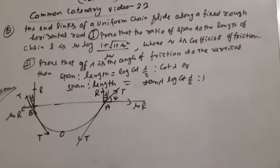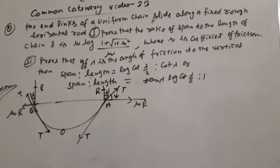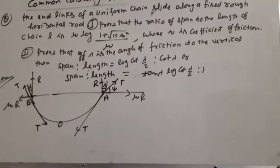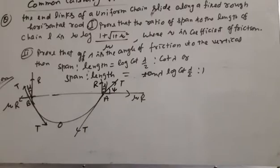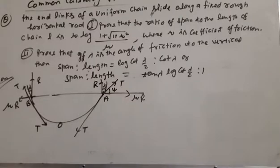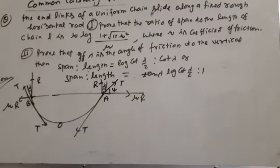Mechanics statistics, catenary video number twenty-three. The question is: a chain of links of uniform chain slides along a fixed horizontal rod. First part: prove that the ratio of the span to the length of chain L is mu·log(1 + root(1 + mu²)) upon mu, where mu is the friction coefficient. Second part: prove that if lambda is the angle of friction, then span ratio equals log(cot(lambda/2))·cot(lambda).